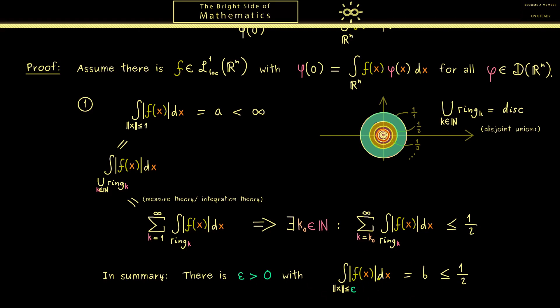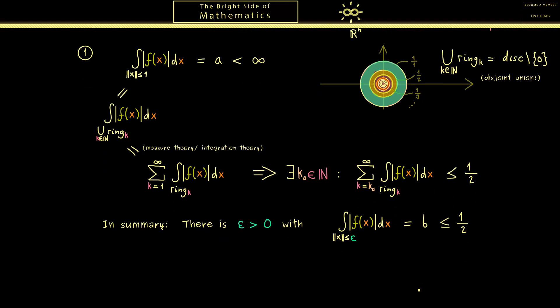Of course this makes totally sense if you just think of some ordinary functions. However it also holds for a locally integrable function. Now this was just a rough idea but I don't think you will have any problems filling in the details. For example one detail I skipped here is that in this union we will not include 0 as a point. However since the whole integral here does not care about a single point the whole calculation is still correct. Okay now with this result from the first step we are ready to finish the proof.